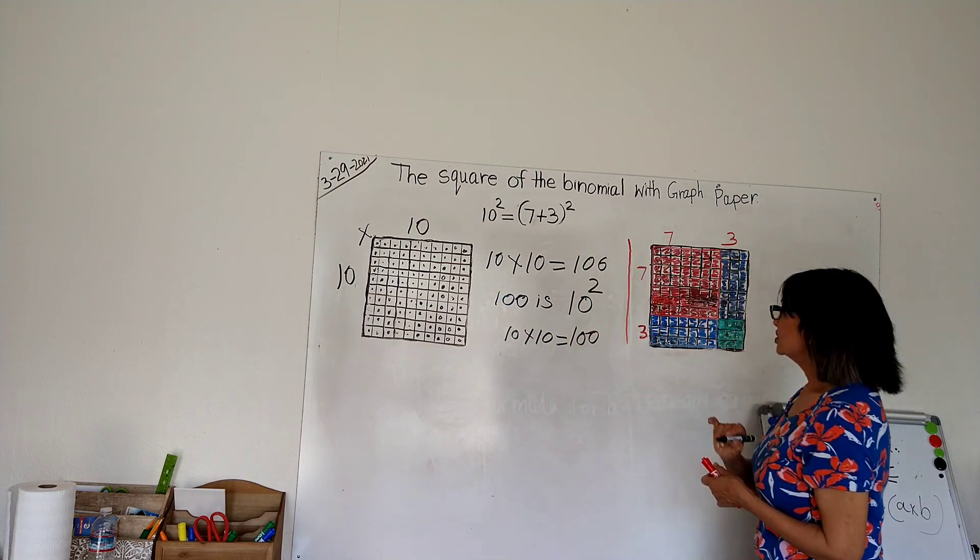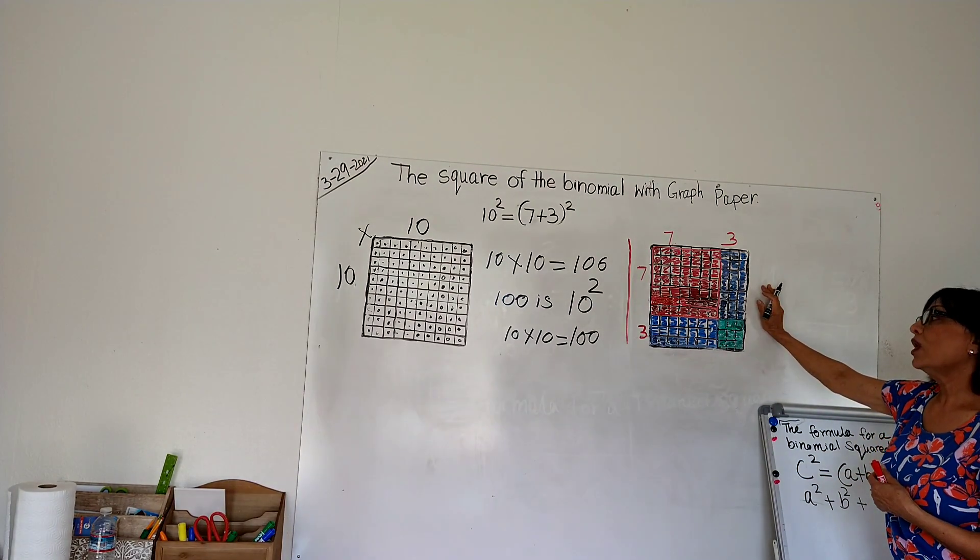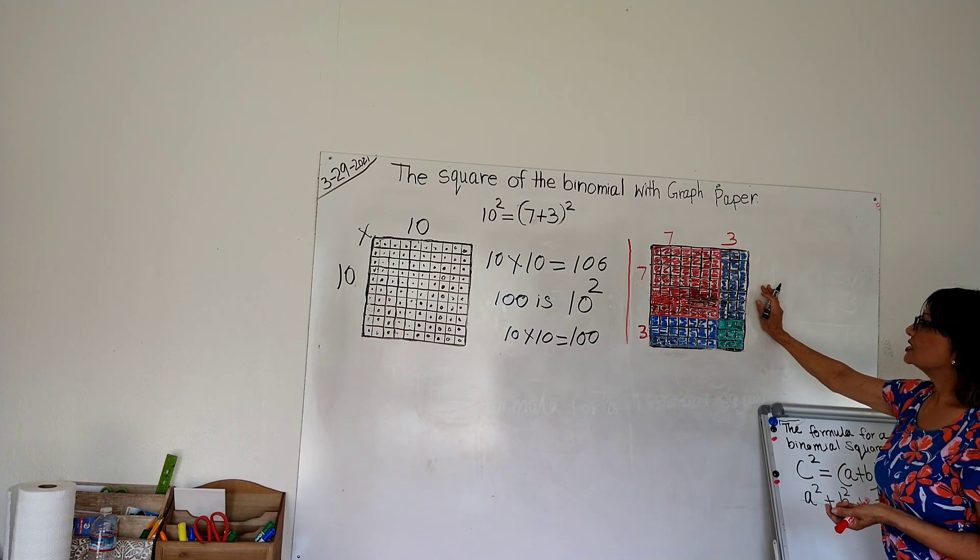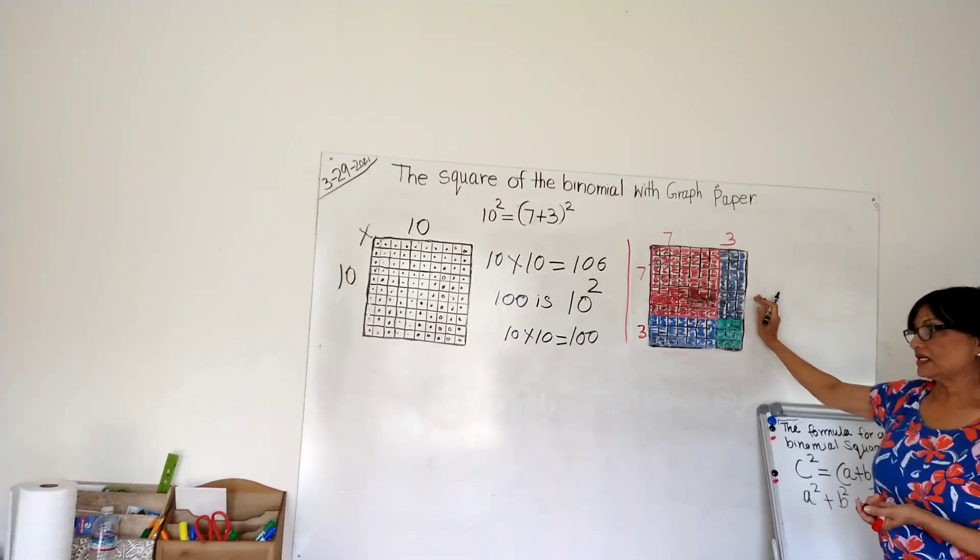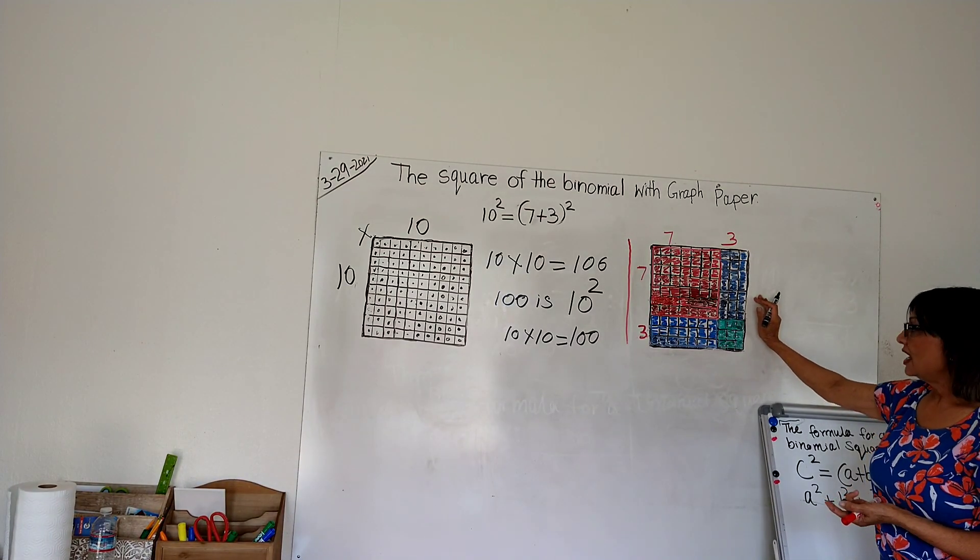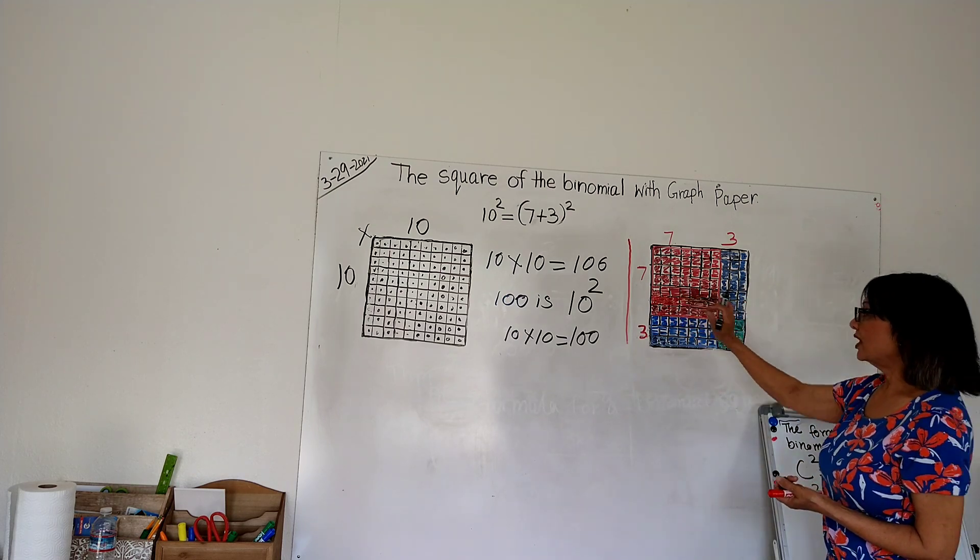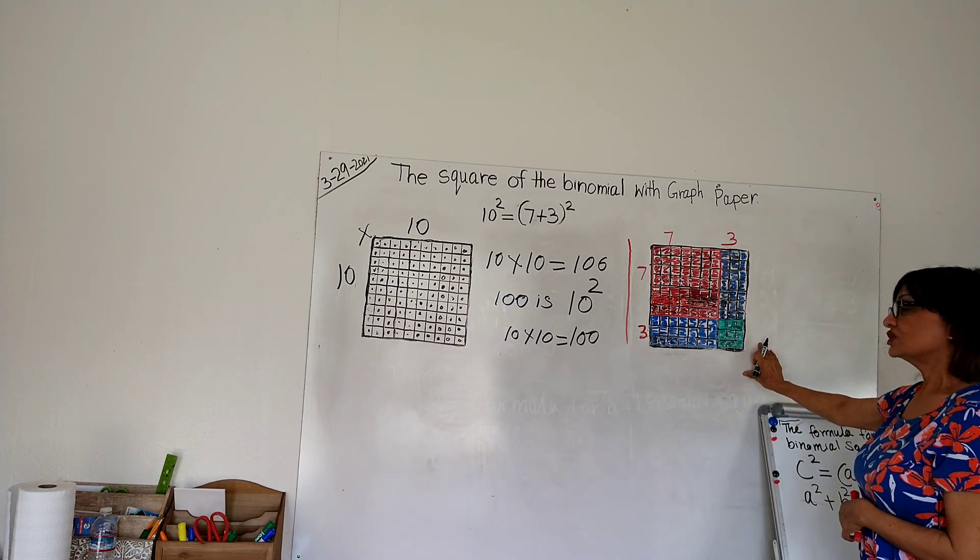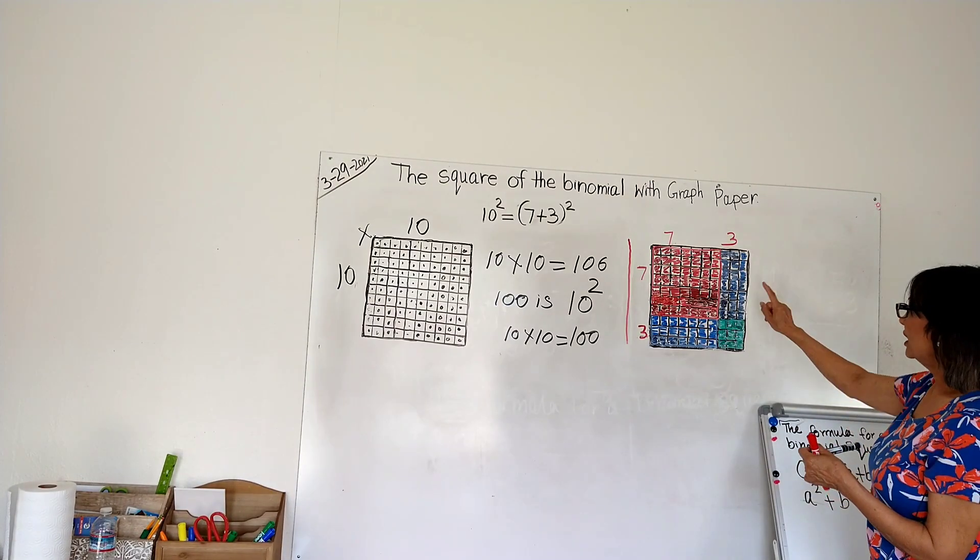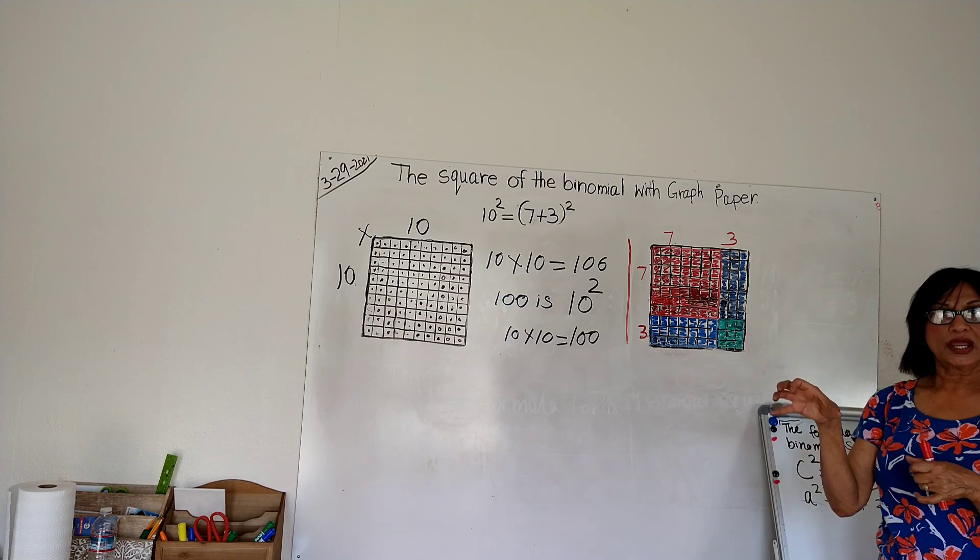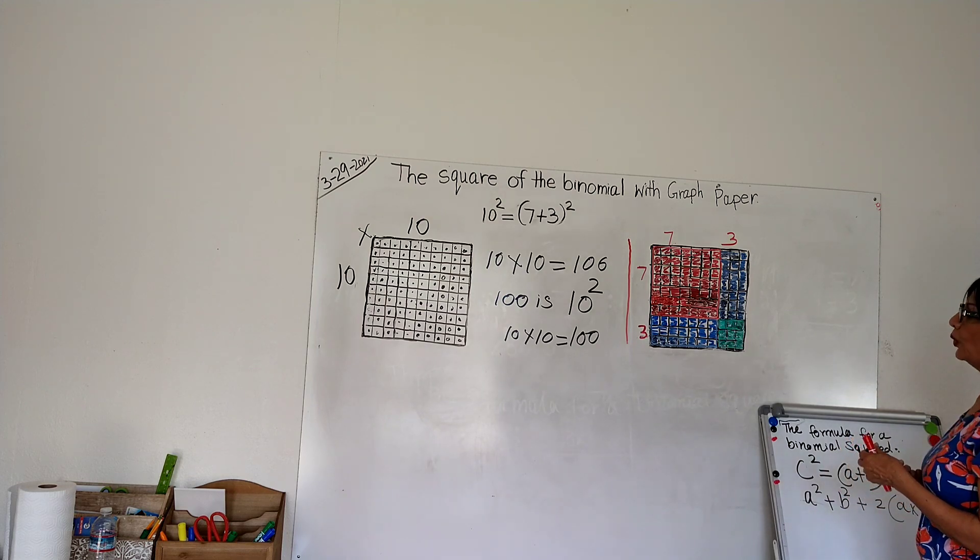Let's do that: 10 times 10 equals 100. Now I have another square of a binomial, so I have divided this square into four parts. Now we have four figures: we have two squares and two rectangles. The squares have different shapes and different products, but the rectangles have the same shape and same product.